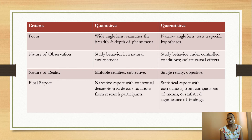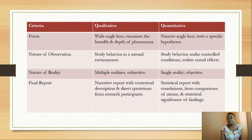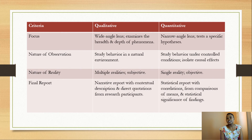Regarding the nature of reality, in qualitative it is multiple and subjective, whereas in quantitative it is one, fixed, and highly objective. Finally, in terms of the report, qualitative reports are mainly narrative with contextual description and direct quotations from research participants, whereas quantitative reports are highly statistical with correlations, comparisons of means, and statistical significance of findings.